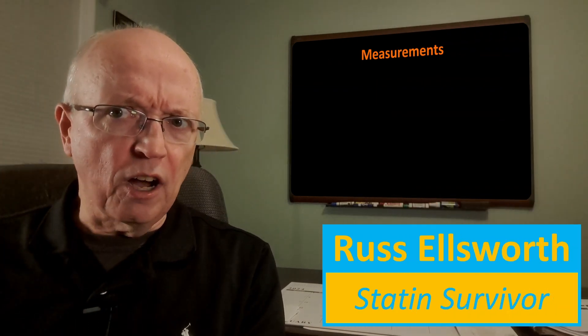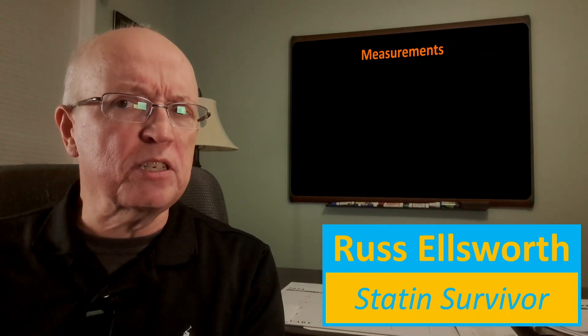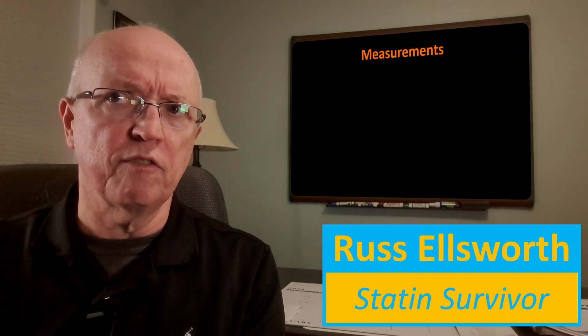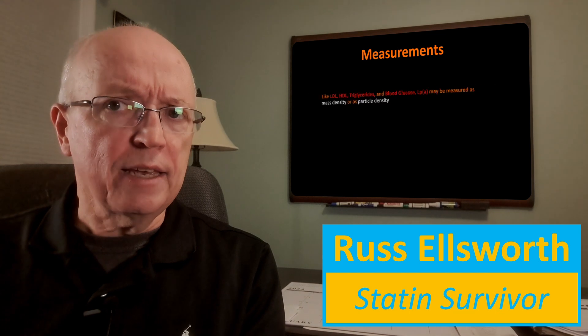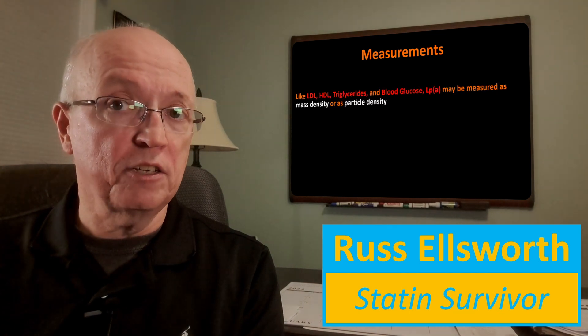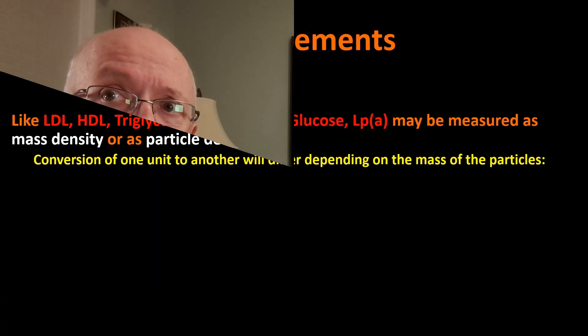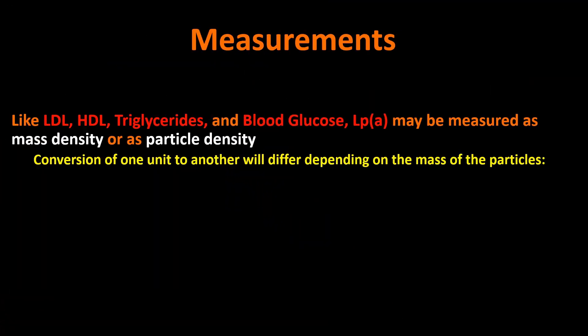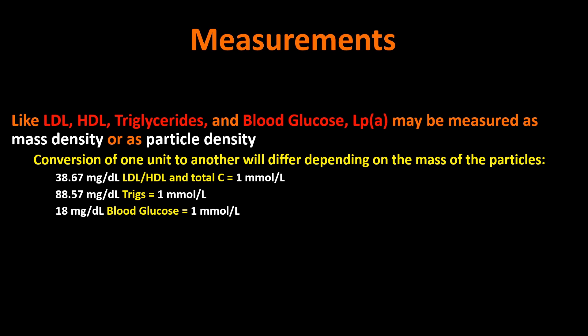Independently — independent of LDL levels, trigs to HDL ratio, or anything like that — it independently correlates with cardiovascular risk in humans. It's important to understand the measurement, specifically the units of measurement. Like LDL, HDL, triglycerides, and blood glucose, it may be measured as either a mass density or as a particle density. With all these types of particles, the conversion from mass density to particle density will differ depending on the mass of the particles.